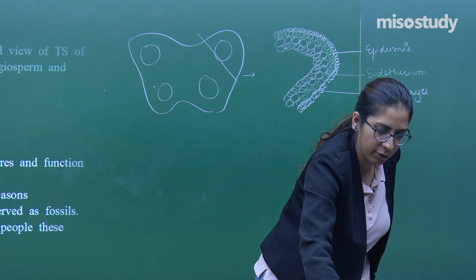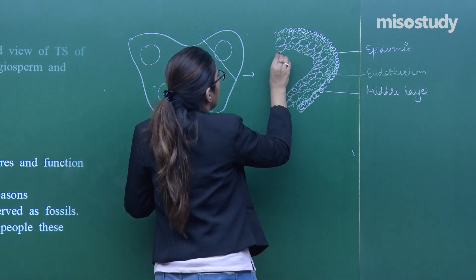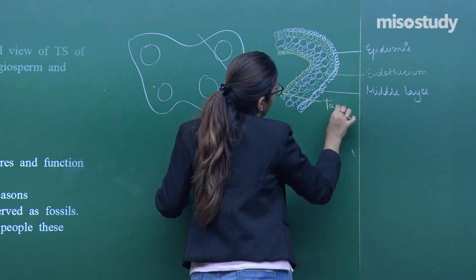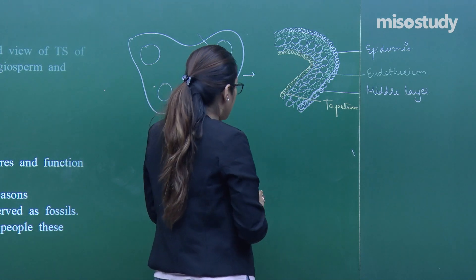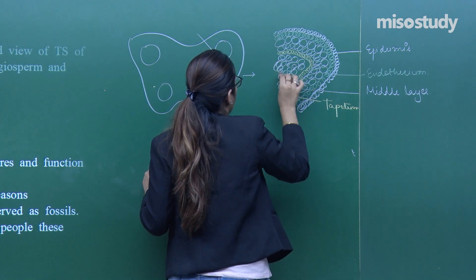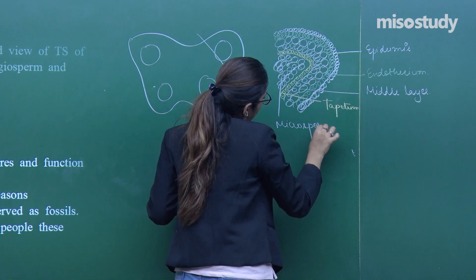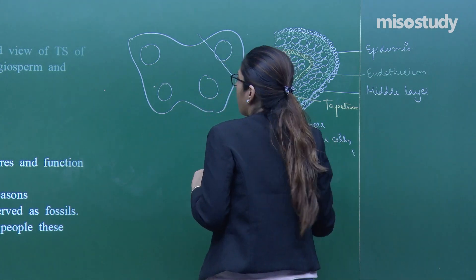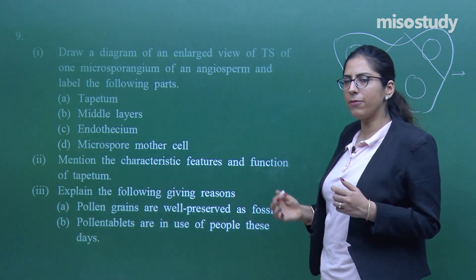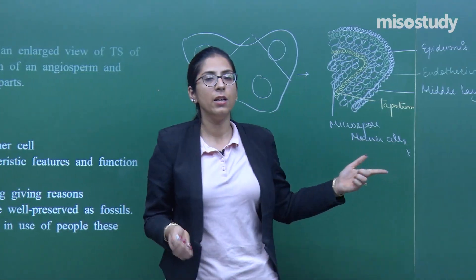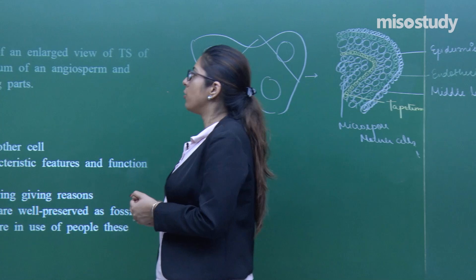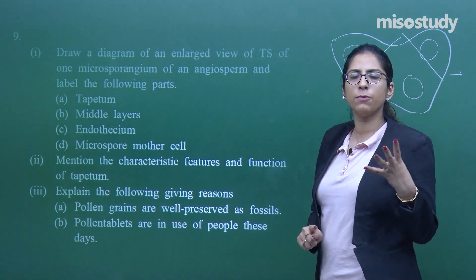After the middle layer, there is a very important layer called the tapetum, which provides nutrition to the developing pollen. Towards the innermost side, the microspore mother cells are present. Remember, the question asks for an enlarged view — draw a detailed, neat, well-labeled diagram. All four parts — tapetum, middle layer, endothesium, and microspore mother cells — must be labeled.